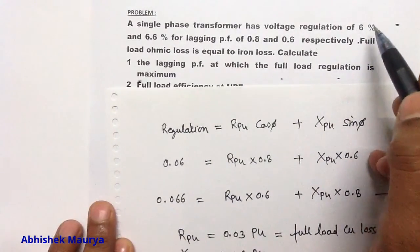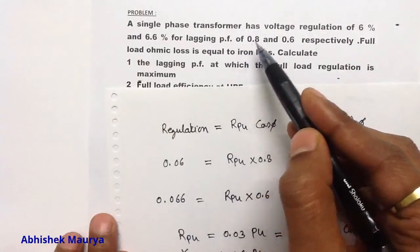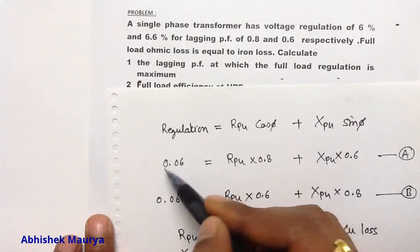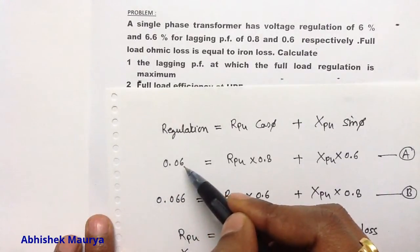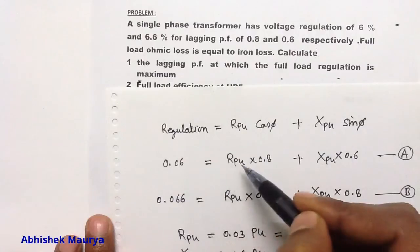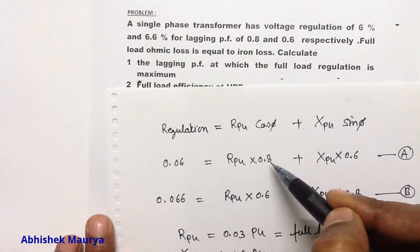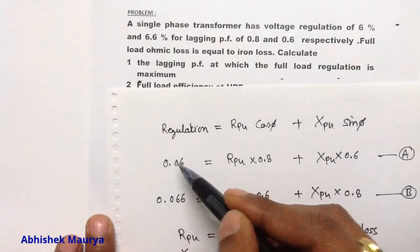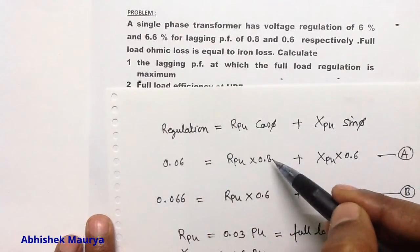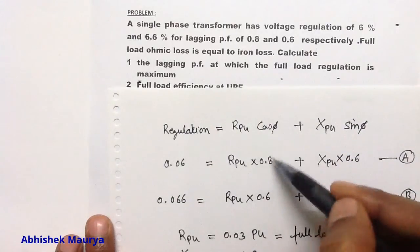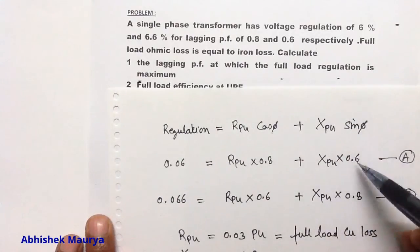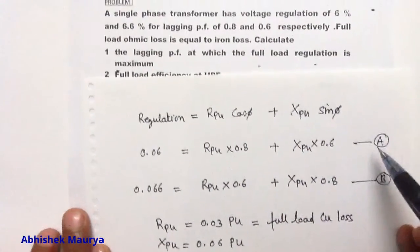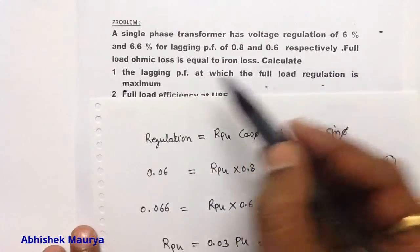The voltage regulation is 6% at a lagging power factor of 0.8. Because the voltage regulation is 6%, I have written 0.06 per unit equals R per unit into 0.8, because this 6% regulation is at a power factor of 0.8. If you know the value of cos(phi) you can find out the value of sin(phi). This is equation number A.